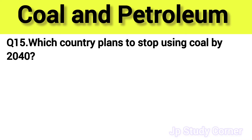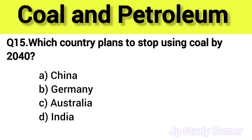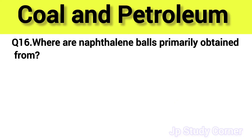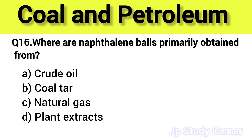Question number fifteen: which country plans to stop using coal by 2040? The right answer is option B — Germany. Question number sixteen: where are naphthalene balls primarily obtained from? The right answer is option B — coal tar.